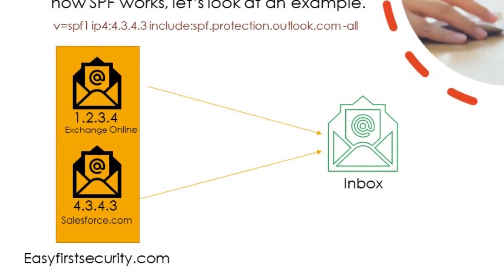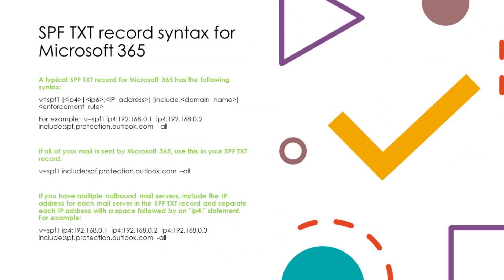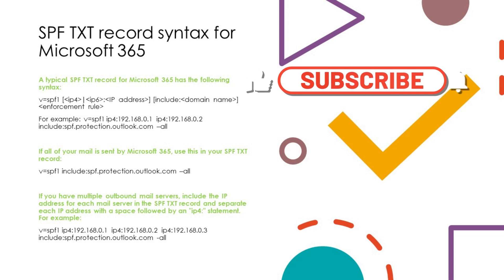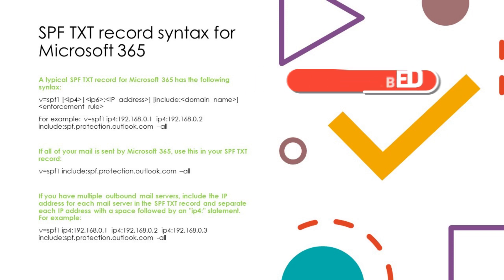This is the typical syntax used to create an SPF record, which you can see on the screen. If you are only sending email from Office 365, there is a straightforward format for that. And if you are using multiple service providers to send email on behalf of your domain, you can include multiple IP addresses in the SPF record using this format.